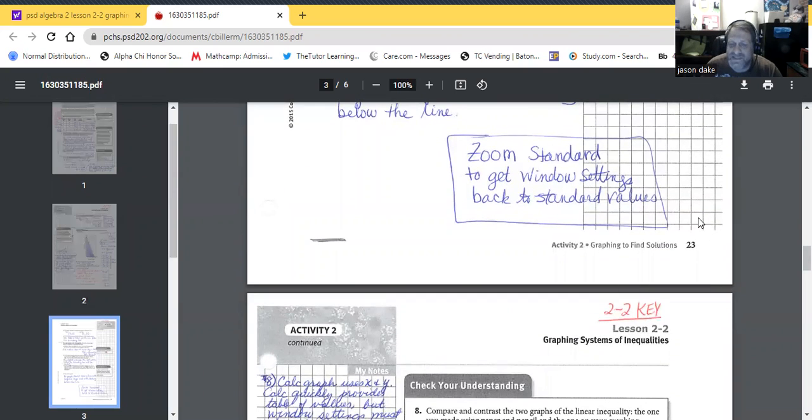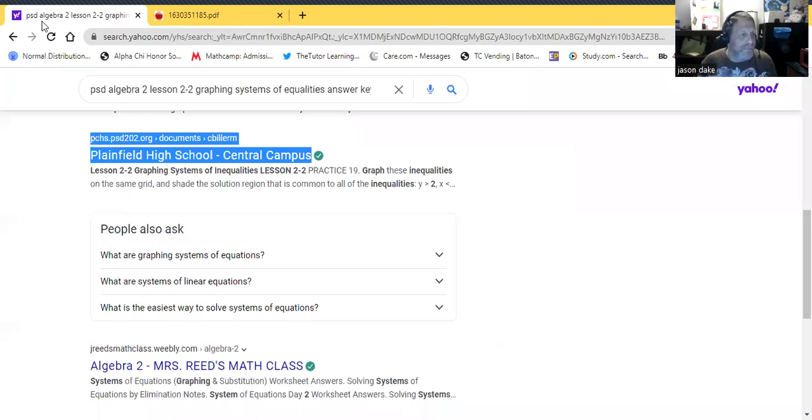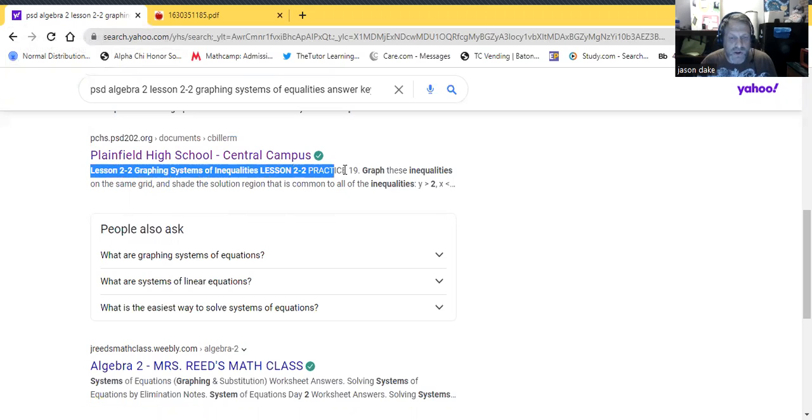So guys, we are going to stop here at check your understanding. Hopefully I'll have a video of that. So we'll stop here. All right guys, so where I'm getting some of these lessons from are, if you look over here at the screen, PSD Algebra 2 Lesson 2-2 Graphing. So I'm getting it from Plainfield High School Central Campus. So that is where I got this lesson plan from. All right guys, I'll see you on the next video. Thank you.